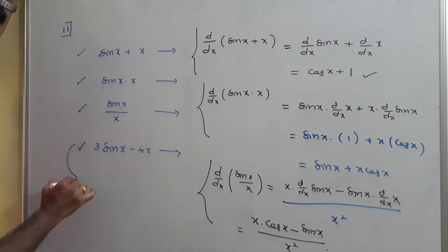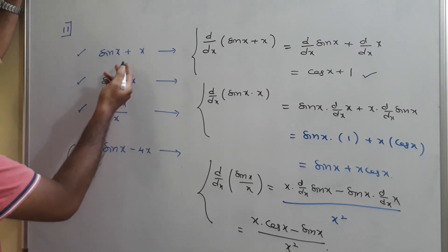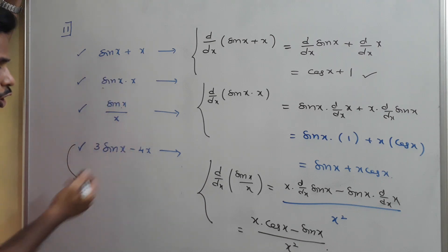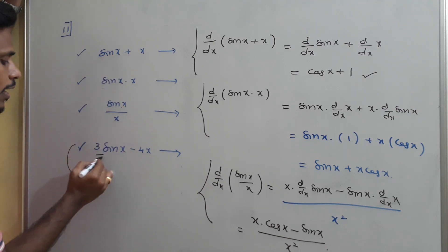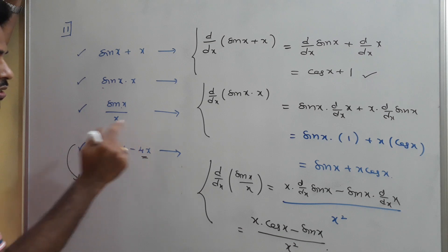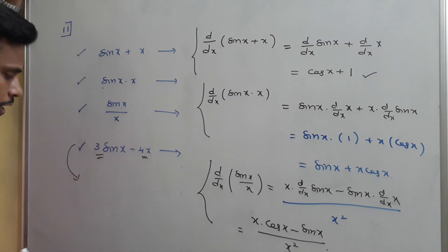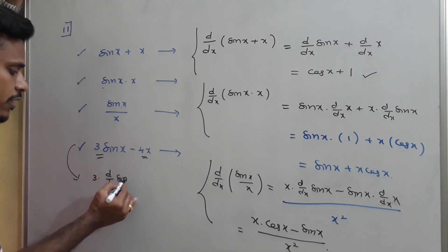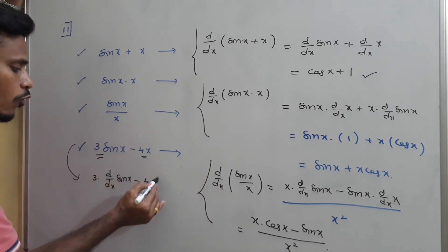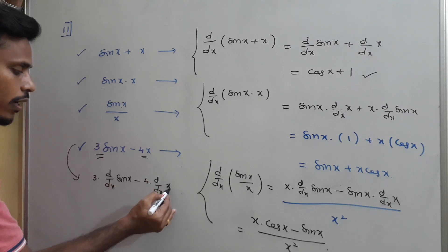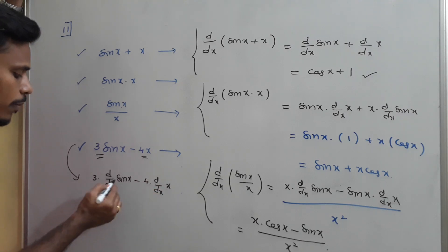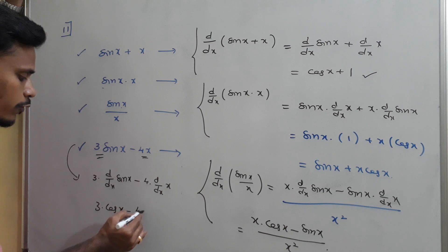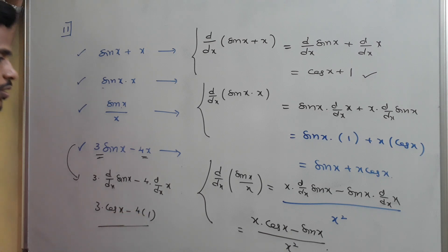For the derivative of 3 sin x minus 4 cos x, apply constant multiplication with the summation rule: 3 times d/dx of sin x minus 4 times d/dx of x. This gives 3 cos x minus 4 times 1, so the answer is 3 cos x minus 4.